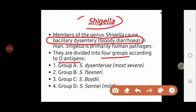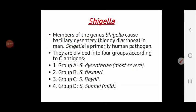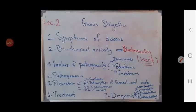Shigella is divided into four groups according to O antigens. These four groups differ in severity: the most severe is group A, Shigella dysenteriae; less severe are Shigella flexneri and Shigella boydii; and the mildest is Shigella sonnei. All four groups can cause bloody diarrhea and dysentery.